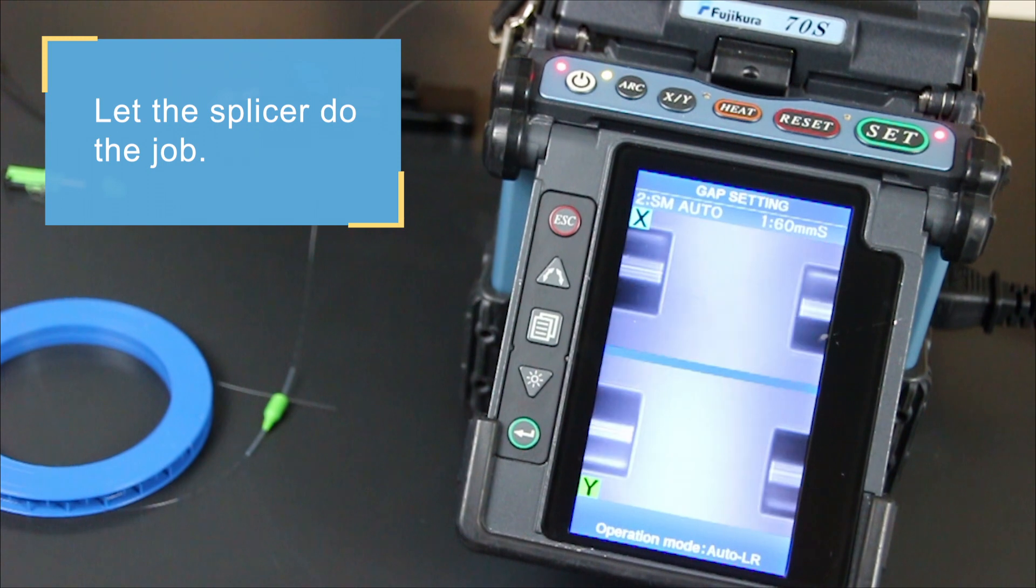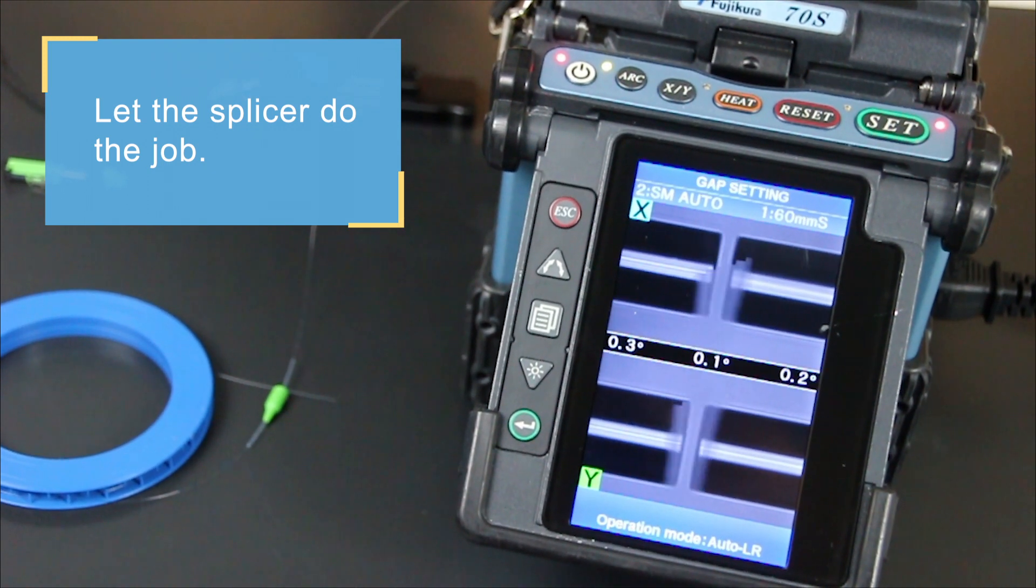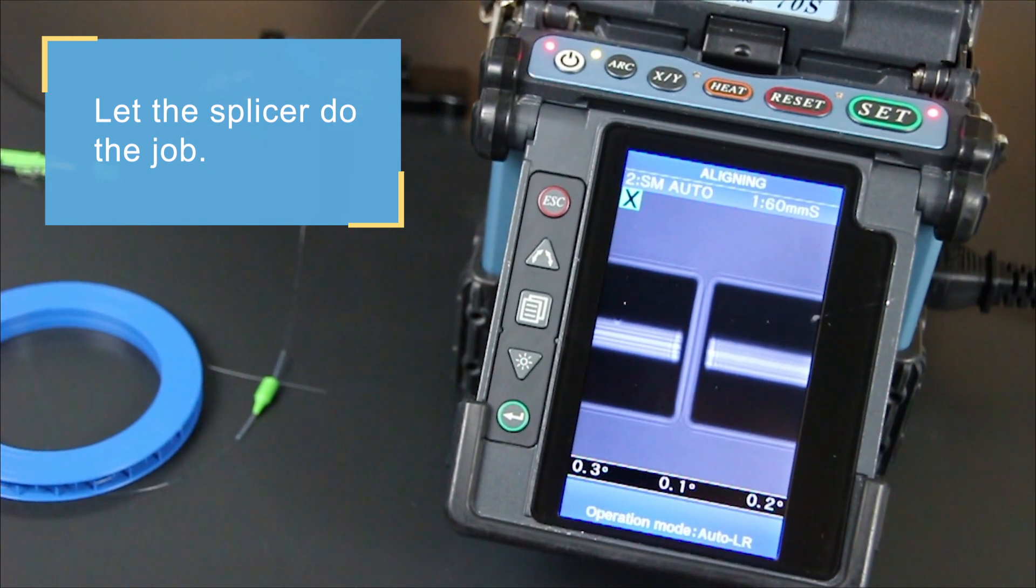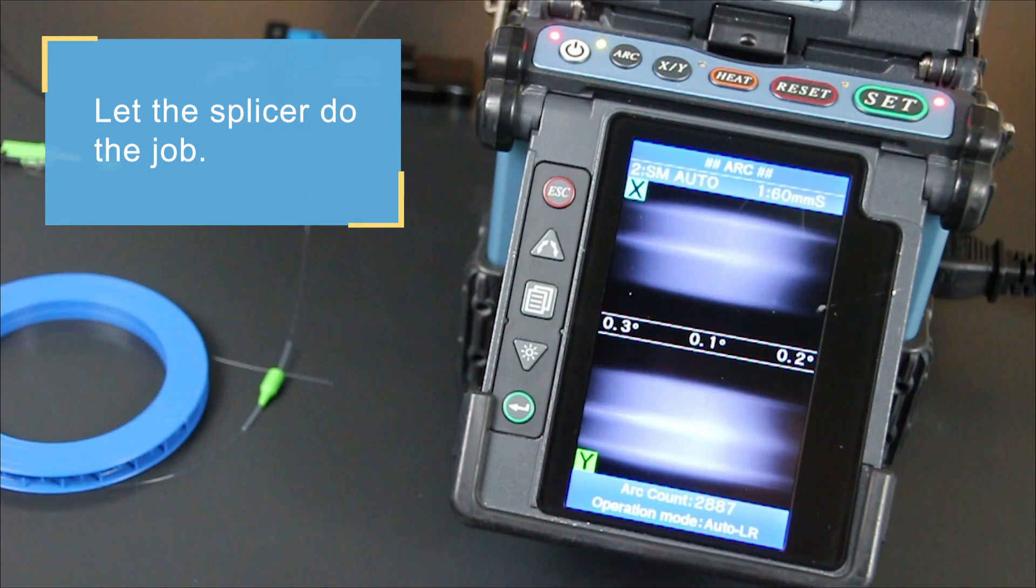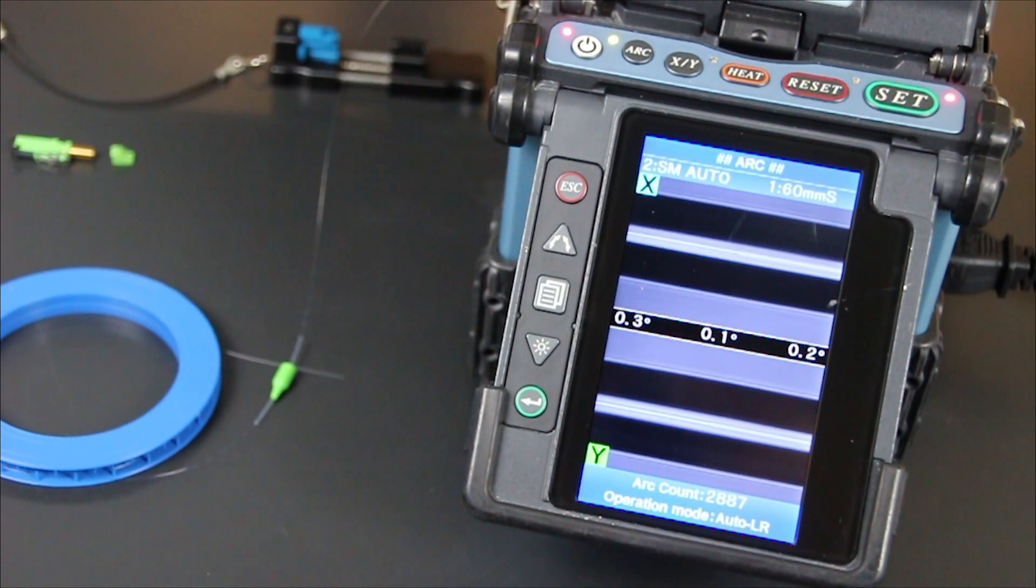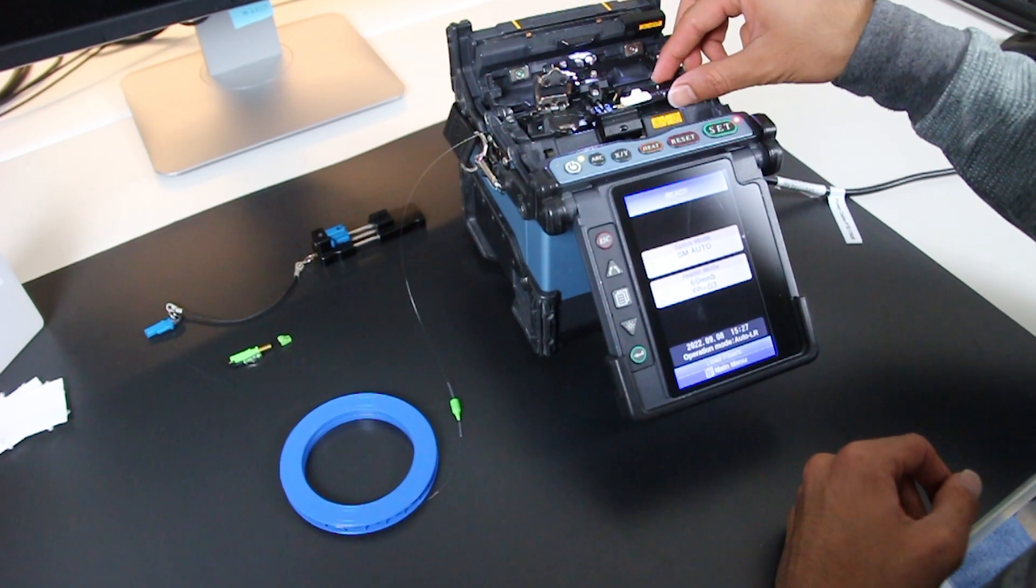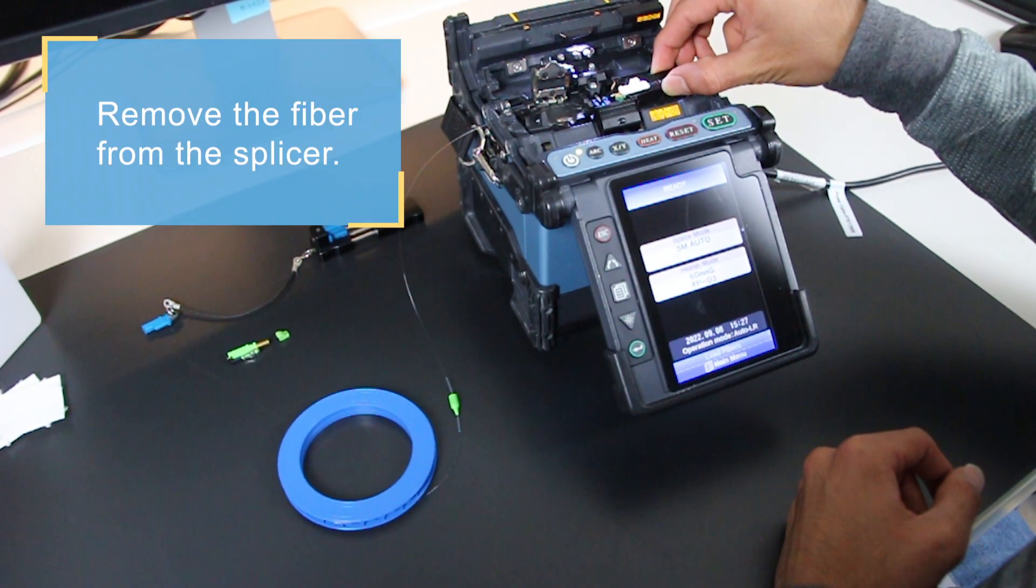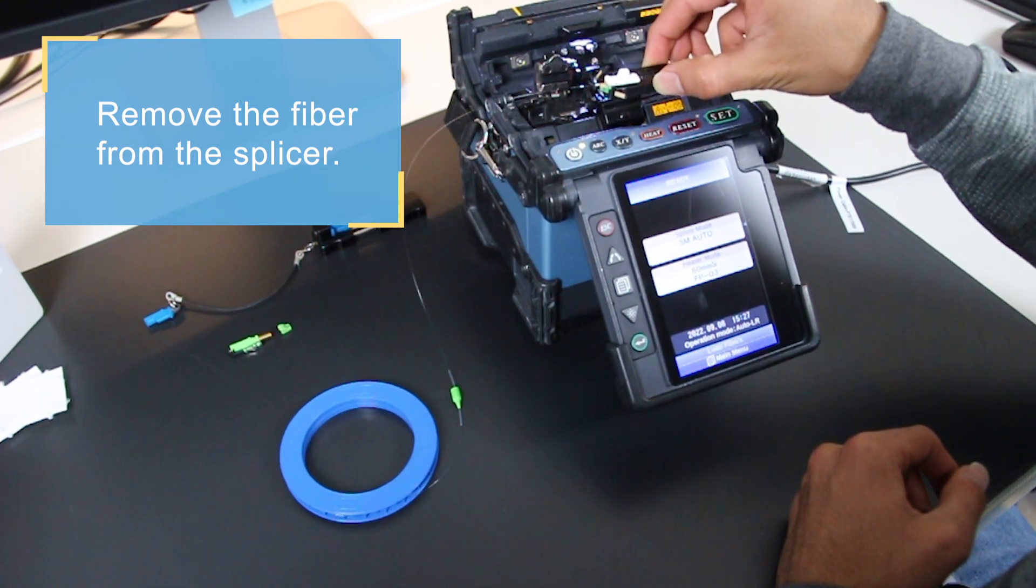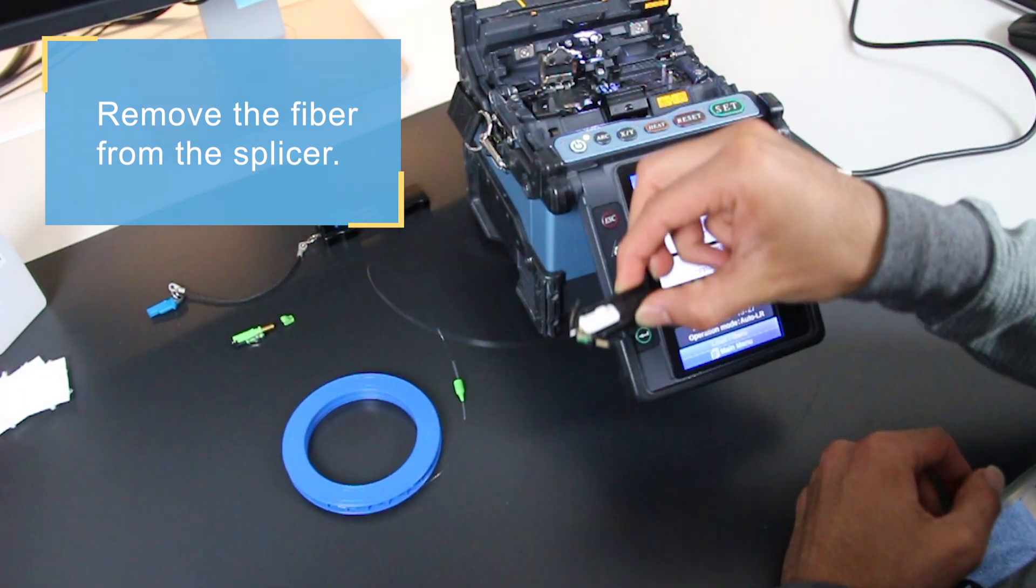Press SET on the splicer and let it do the job. Once the process is finished, you can remove the fiber from the splicer.